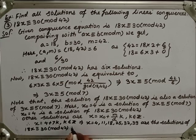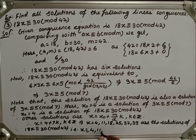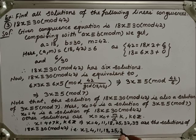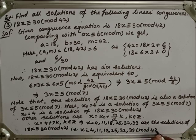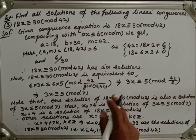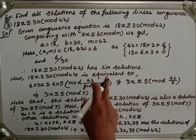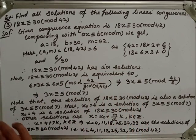That is x ≡ 4, 11, 18, 25, 32, 39 (mod 42). As such the 6 solutions to this linear congruence we can determine.